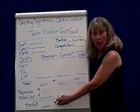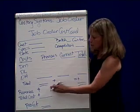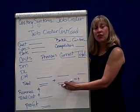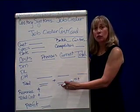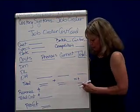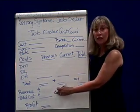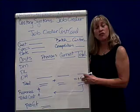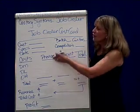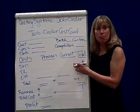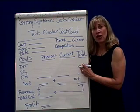Down at the bottom of the job order cost card, we will generally list the revenue — how much did the customer pay you for this particular job? Compare that with the total cost of the job, and you can see if this job was profitable or not. These are the main, basic ingredients in any job order cost card.